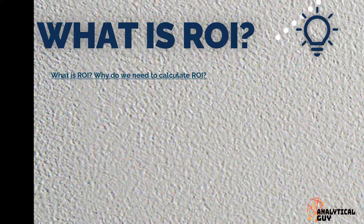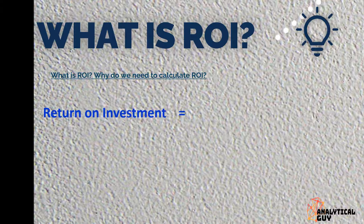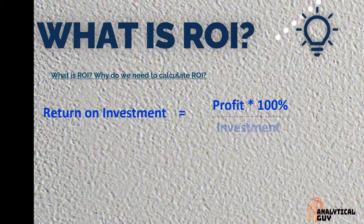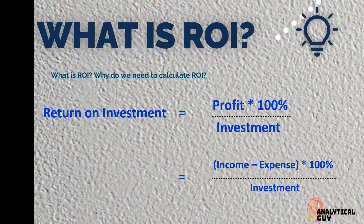So what is ROI and why do we need to calculate it? ROI is a financial metric widely used to measure the probability of gaining a return from an investment. The formula for ROI is: Profit divided by Investment, multiplied by 100%, which is also equal to (Income minus Expenses) divided by Investment, multiplied by 100%.